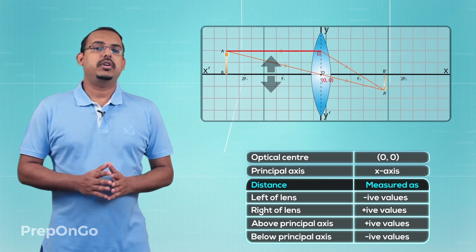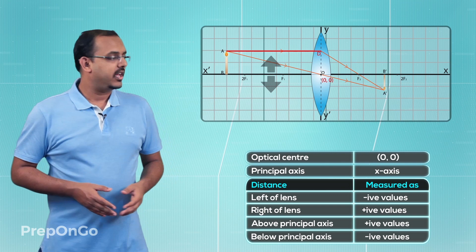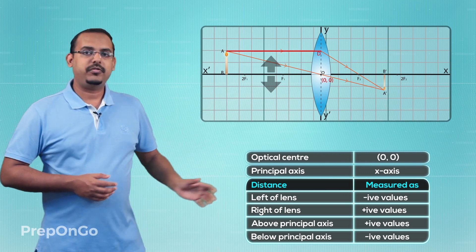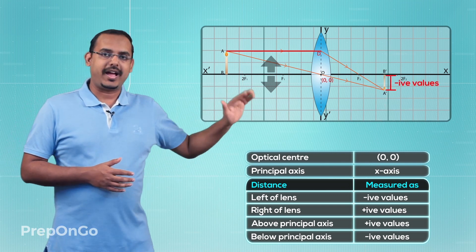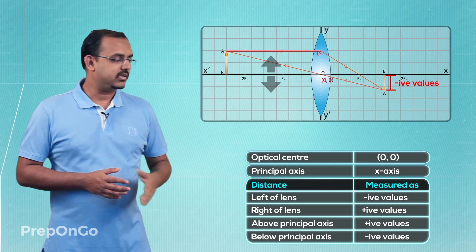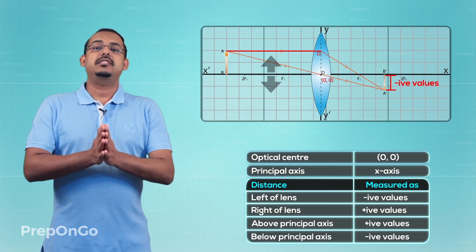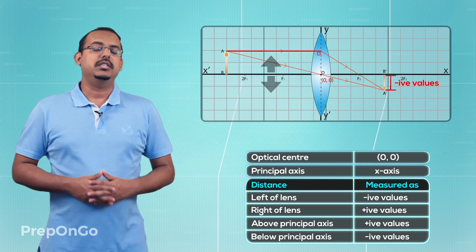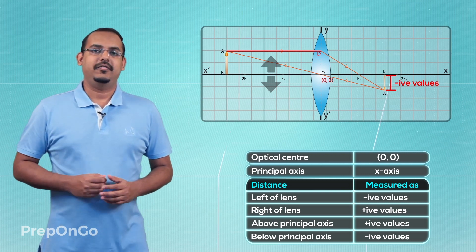So in the case where you get a real and inverted image, we know that the image is going to be formed in the direction of the negative y-axis, or below the principal axis. Due to this, the size of a real and inverted image is always measured in negative values.